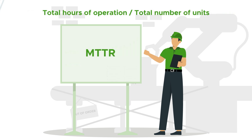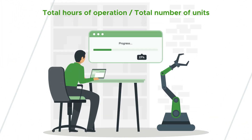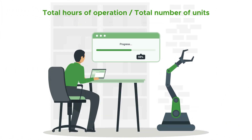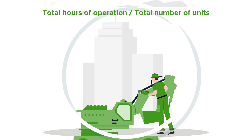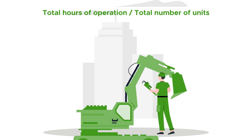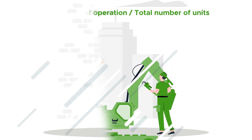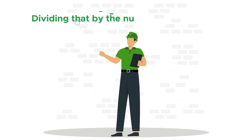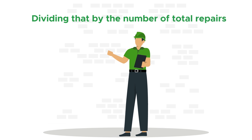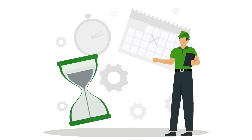MTTR is the average amount of time required to repair and restore a system to full functionality. By adding the total time spent on equipment repairs in a given time frame and dividing that by the number of total repairs in the same time frame, you're able to find your mean time to repair.